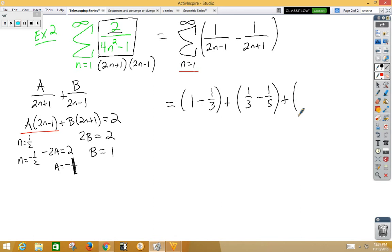Plugging in n=3, we get 1/5 - 1/7, and the pattern continues. Notice the negative 1/3 and positive 1/3 cancel. The negative 1/5 and positive 1/5 cancel, and this continues.